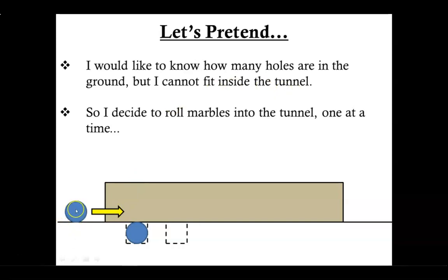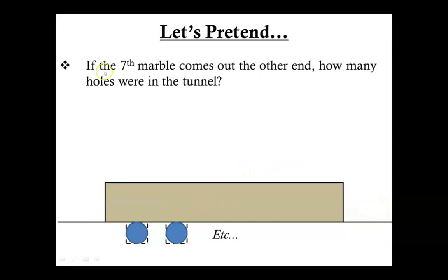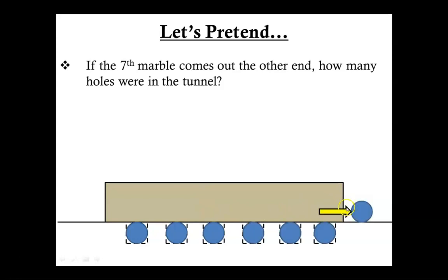So I continue doing this, throwing marbles into the tunnel and waiting for one to come out the other side. If marble number seven comes out the other side of the tunnel, how many holes were inside this tunnel? There must have been six. So if marble number seven comes out, then I can assume that each of those holes was filled with a marble, allowing my marble to roll through the tunnel. Therefore there must have been six holes.